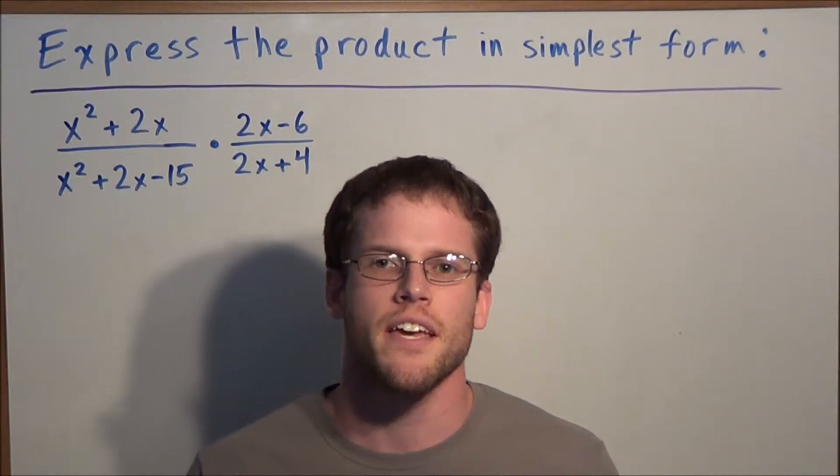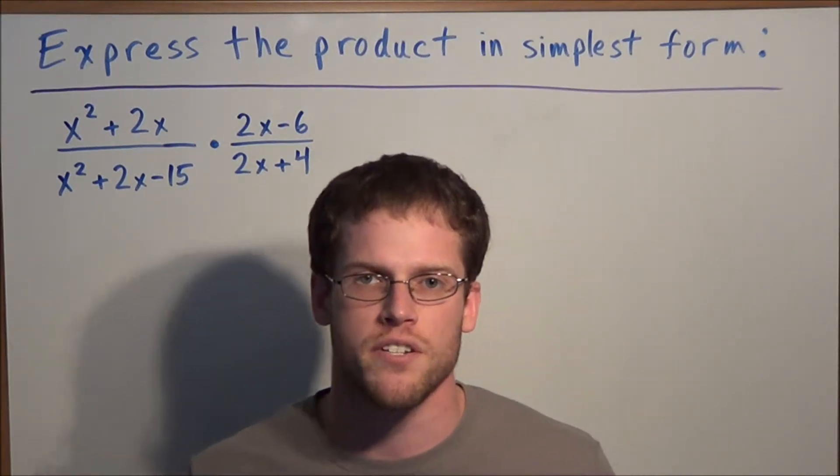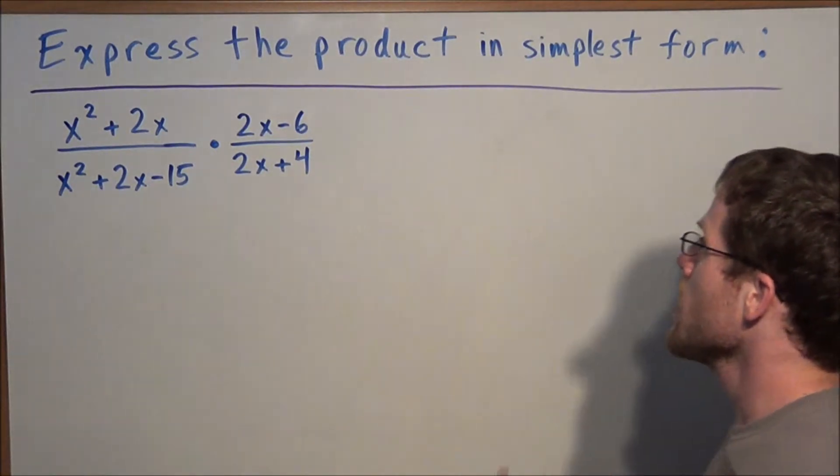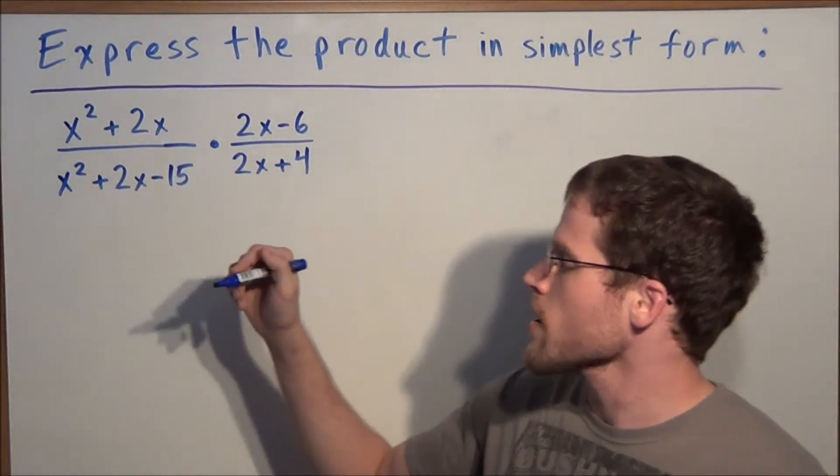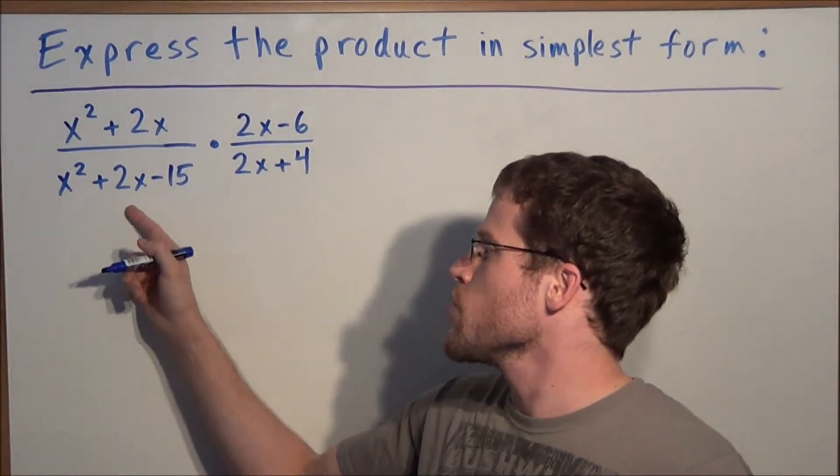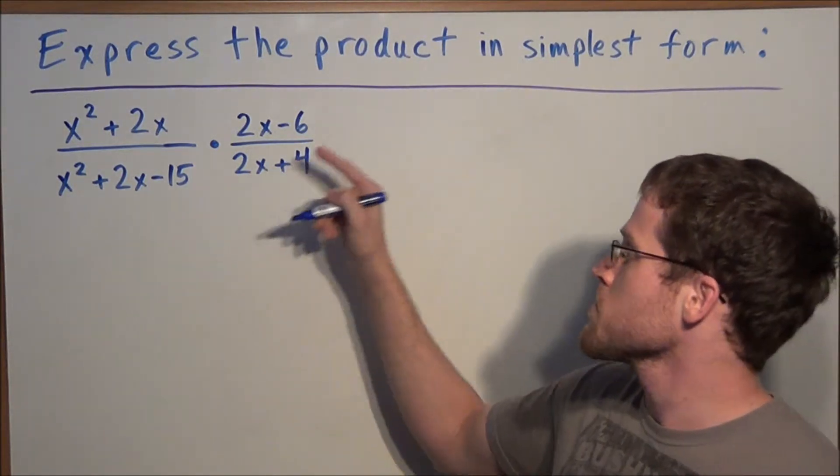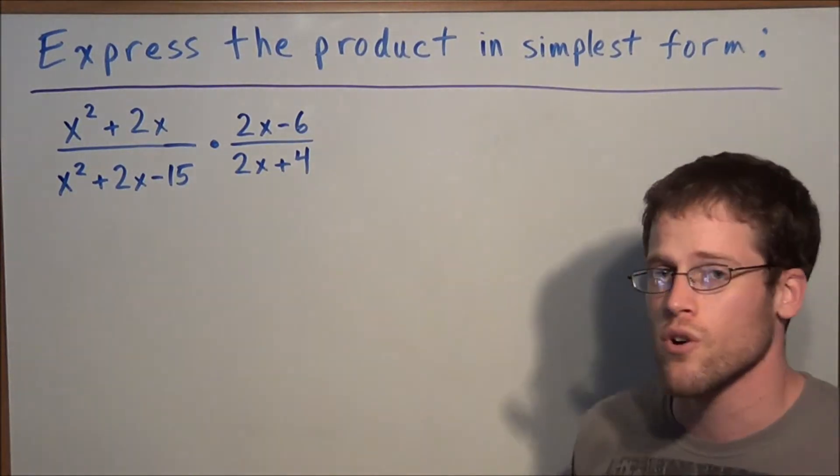Hi, my name is Mr. D and today I want to take a look at multiplying rational expressions. So we have express the product in simplest form and we have x squared plus 2x over x squared plus 2x minus 15 times 2x minus 6 over 2x plus 4.